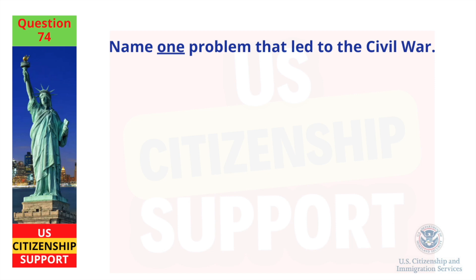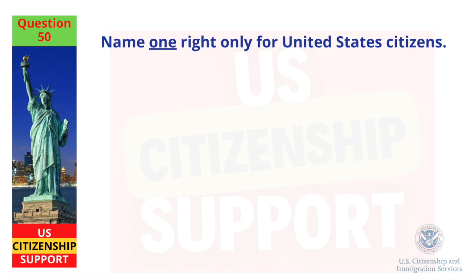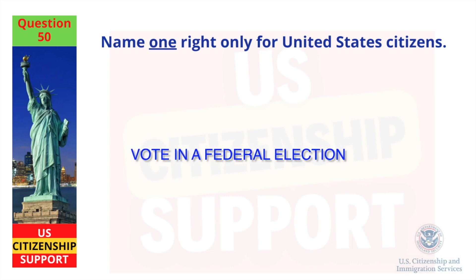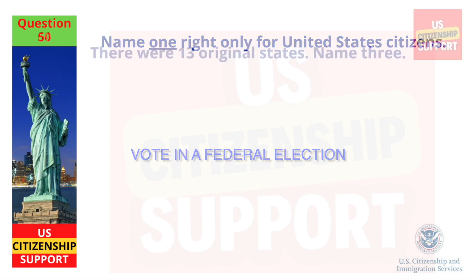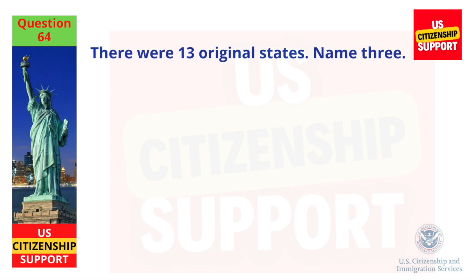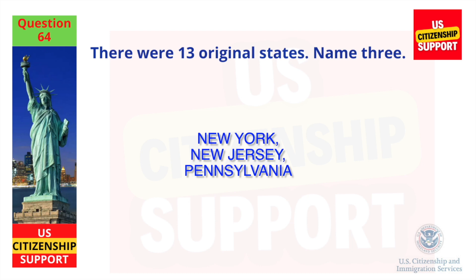Name one problem that led to the Civil War. Slavery. Name one right only for United States citizens. Vote in a federal election. There were 13 original states — name three. New York, New Jersey, and Pennsylvania.